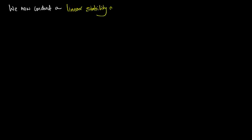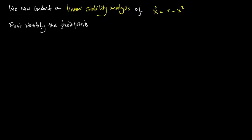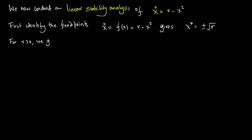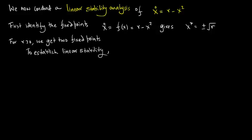Let's now conduct a linear stability analysis of x-dot equals r minus x-squared. We first identify the fixed points: f(x) = r minus x-squared yields x* = ± √r. For r greater than 0 we get two fixed points. To establish linear stability, f′(x*) = −2x*.